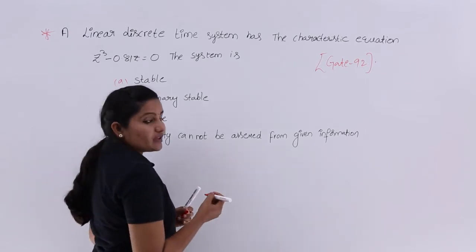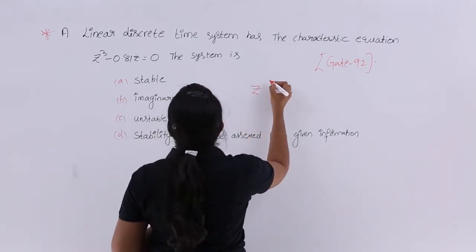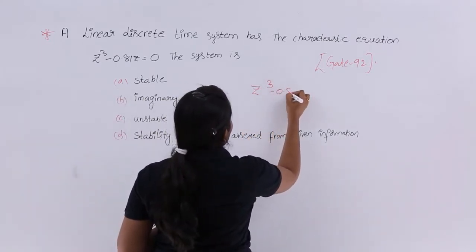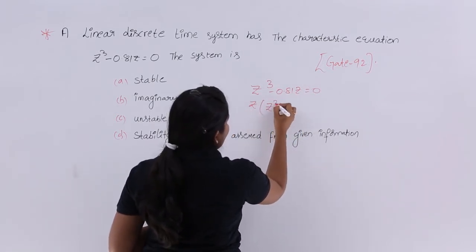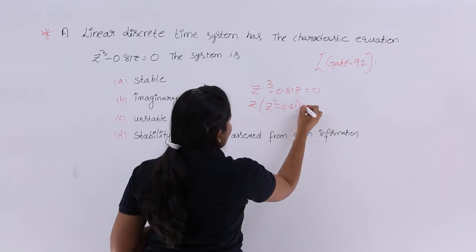Here, whenever they give an equation like this, we need to see for the poles. Z³ - 0.81Z = 0. I am taking Z common here: Z(Z² - 0.81) = 0.